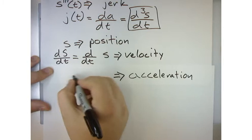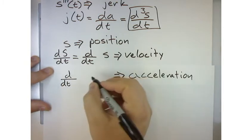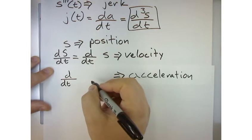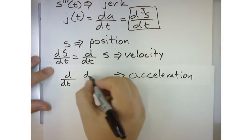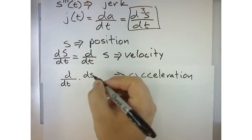So I would say d dt, right? Of ds. So how would I write that? Like that.